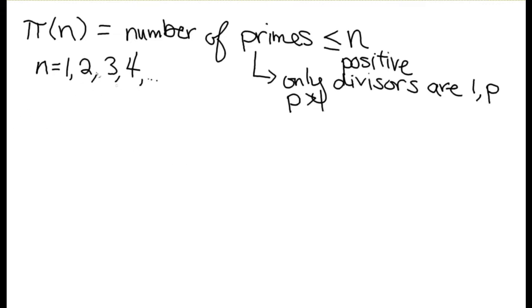So just a quick look at some of the smaller numbers. Pi of 1, well how many numbers smaller than or equal to 1 are prime? None, because it has to be bigger than 1 to be prime. So this one's a little tricky. Pi of 1 is 0.